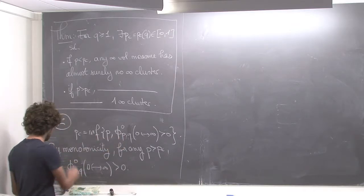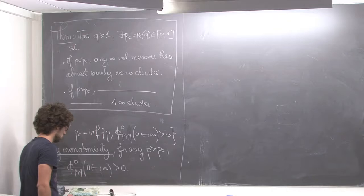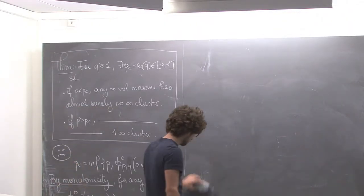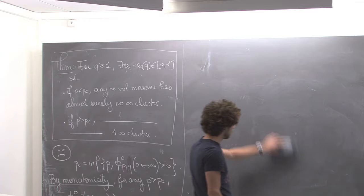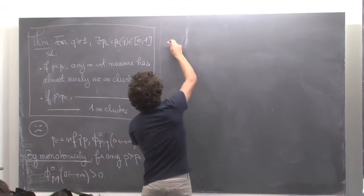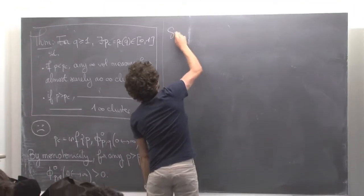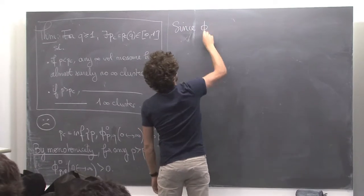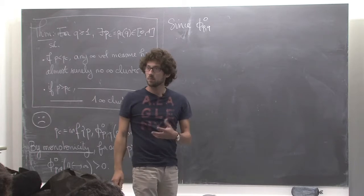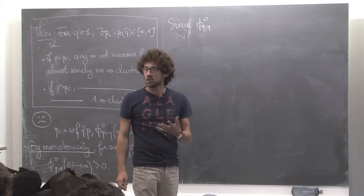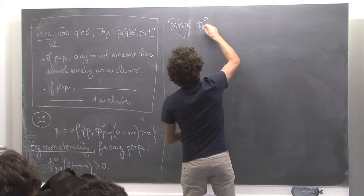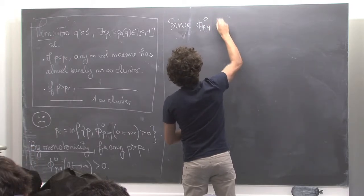The second property is one that I didn't prove: the fact that phi_0 is ergodic. I mentioned it but didn't have time to prove it, and you can try to do it. It's the same strategy as Bernoulli percolation. So since phi_0(P,Q) is ergodic...